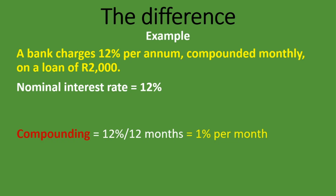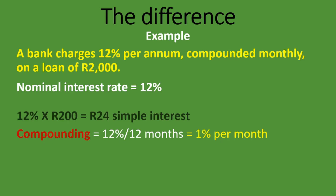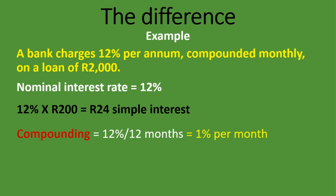The compounding is monthly, so it's 12% divided by 12 months to get 1% per month. That means every month we are paying 1% on the loan — and not just 1% on the loan, but 1% on the loan plus the interest each month. For the nominal interest rate, we have 12% times 2,000 rand, which gives 240 rand simple interest for one year.